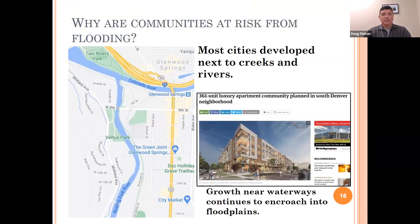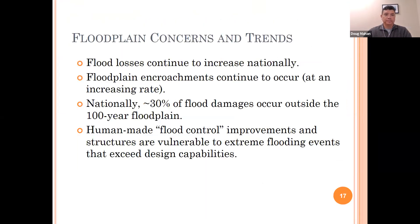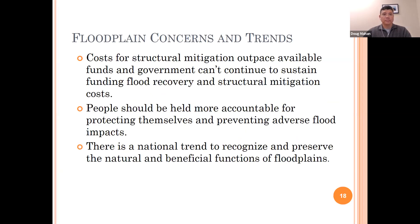Why are communities at risk from flooding? In the past, most cities developed next to creeks and rivers, and growth near waterways continues to encroach into floodplains. Flood losses continue to increase nationally, and floodplain encroachments continue to occur at an increasing rate. Nationally, approximately 30 percent of all flood damage claims occur outside the 100-year floodplain. Human-made flood control improvements and structures are vulnerable to extreme flooding events that exceed design capabilities. Costs for structural mitigation outpace available funds, and government cannot continue to sustain funding for flood recovery and structural mitigation costs.